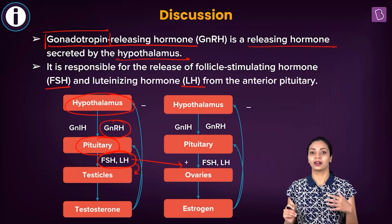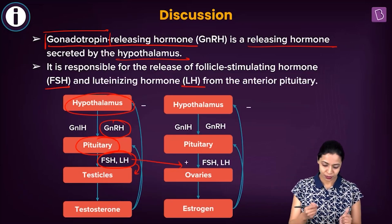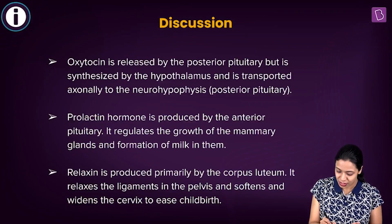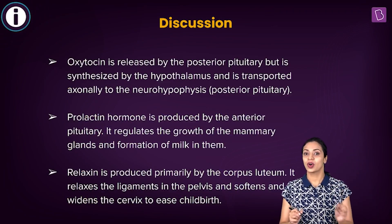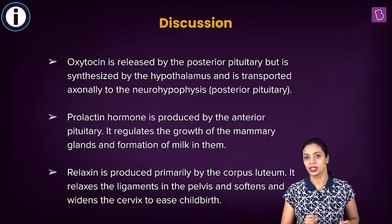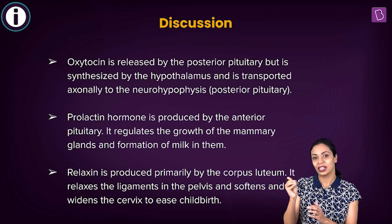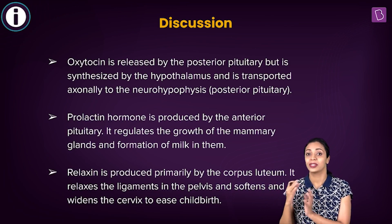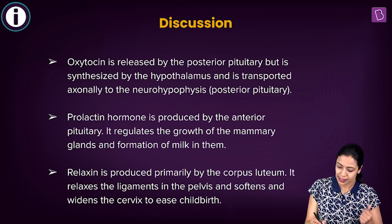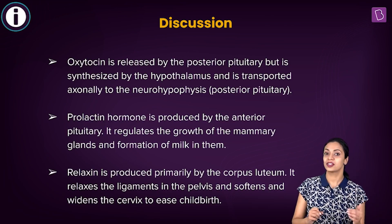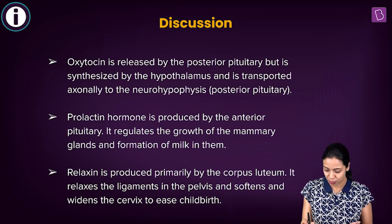Those are the functions of the gonadotropins produced by the anterior pituitary lobe. Among the other options in this question were oxytocin, prolactin, and relaxin. Oxytocin is a hormone released by the posterior lobe of the pituitary, but it is produced by the hypothalamus. The hypothalamus produces oxytocin and axonally transports it to the posterior lobe of the pituitary — the neurohypophysis — where it is stored and secreted.